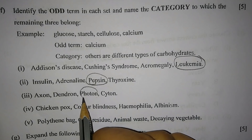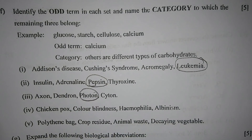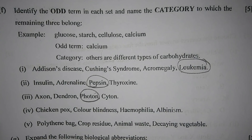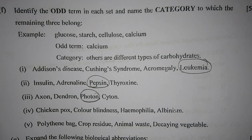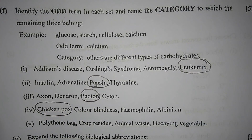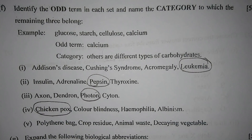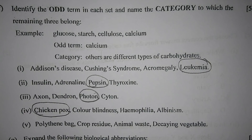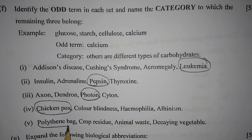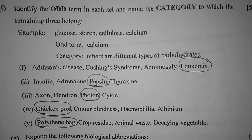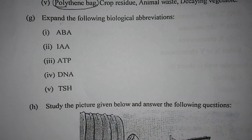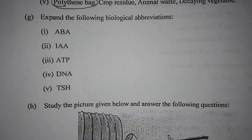Number 3 — axon, dendron, photon, cyton. Photon is the odd one out; the others are parts of nerve cells. Number 4 — chickenpox, color blindness, hemophilia, albinism. The odd one out is chickenpox; the others are genetic disorders. Number 5 — polythene bag, crop residue, animal waste, decaying vegetable. The odd one out is polythene bag; the others are biodegradable waste.